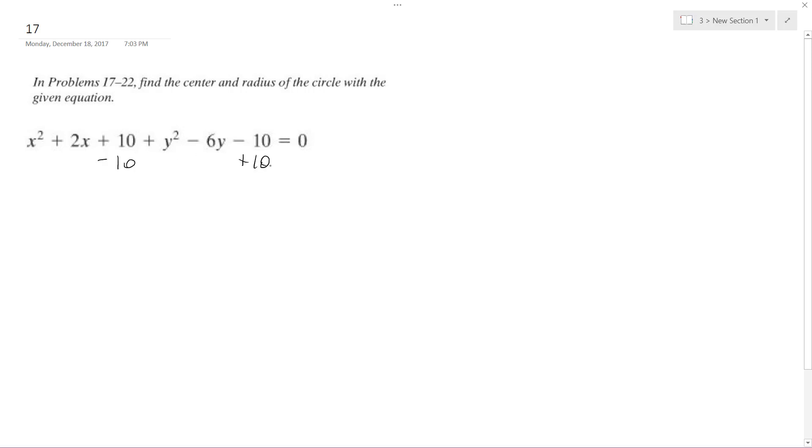First thing I'm going to do is subtract 10, add 10—they cancel each other out, so I'm left with x squared plus 2x, plus y squared minus 6y equals 0.